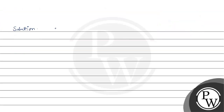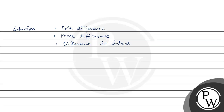We can write the main points: path difference causes phase difference, phase difference causes a difference in intensity, and this leads to constructive and destructive interference producing bright and dark fringes.